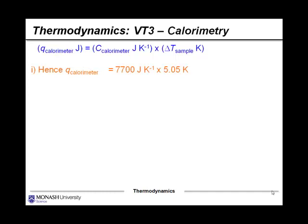Converting to joules per kelvin, we get 7,700 multiplied by the change in temperature (5.05 K), then convert back to kilojoules. That gives the energy absorbed by the calorimeter, which is a positive value. Since the heat of the reaction is equal in magnitude but opposite in sign, the heat of the reaction is −38.9 kilojoules.